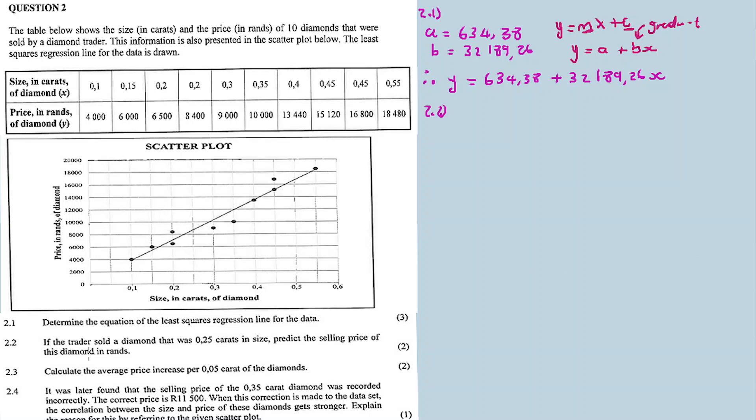Question 2.2: If the trader sold a diamond that was 0.25 carats in size, predict the selling price of this diamond in rents. So the 0.25 is the x value. Now we will predict using our regression equation. Because this equation, you just substitute and then whatever answer you get, that's your price prediction.